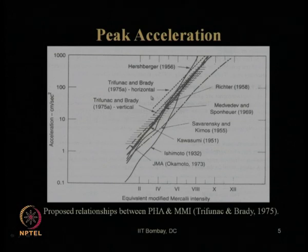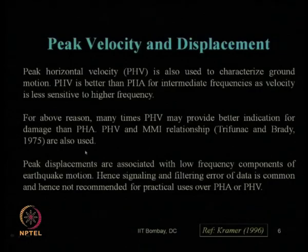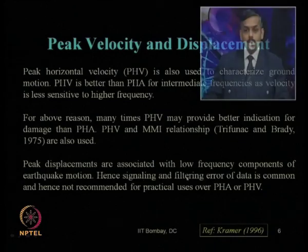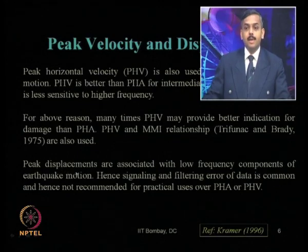We also saw the relationships between PHA versus MMI and PVA versus MMI, as proposed by Trifunac and Brady in 1975. If you know the MMI value at a site, you can use these relationships to get PHA or PVA for design. We discussed peak horizontal velocity (PHV), which is a better estimate than PHA because it captures intermediate frequency content well. Peak displacement values, however, are unreliable due to filtering errors when removing noise.